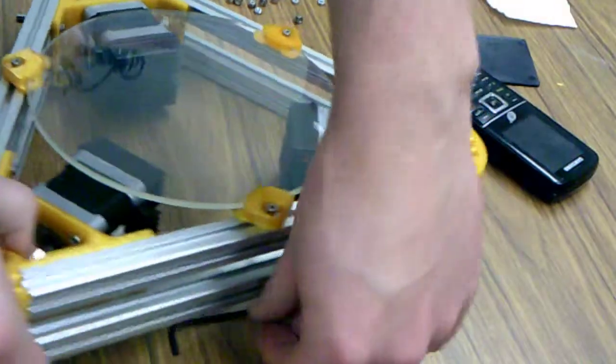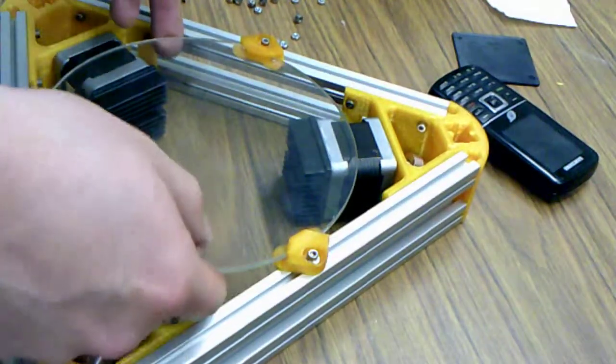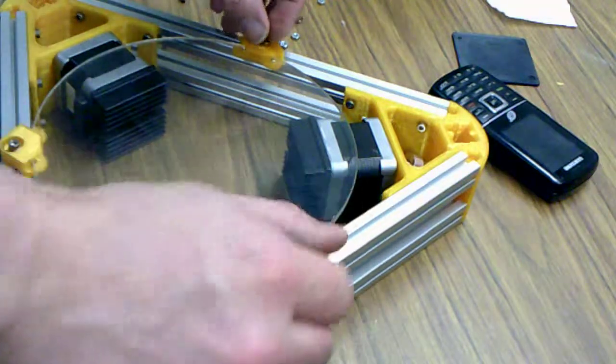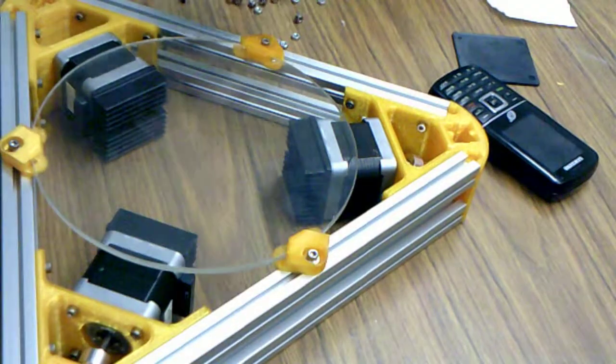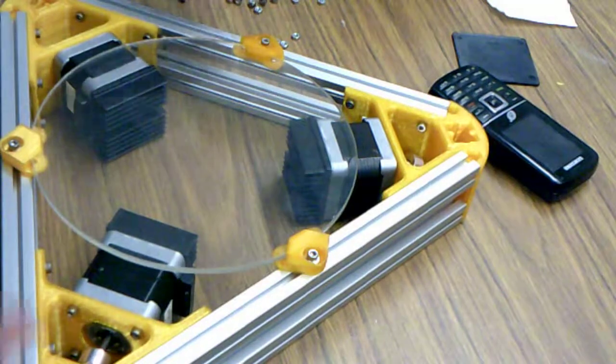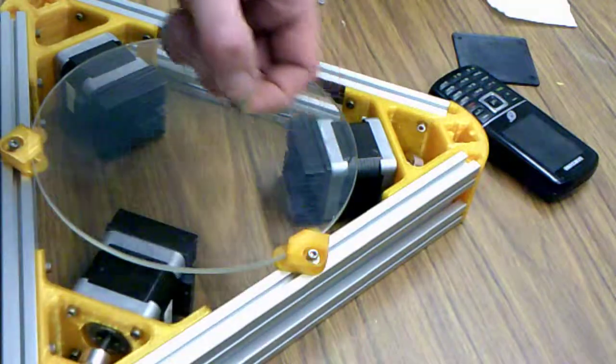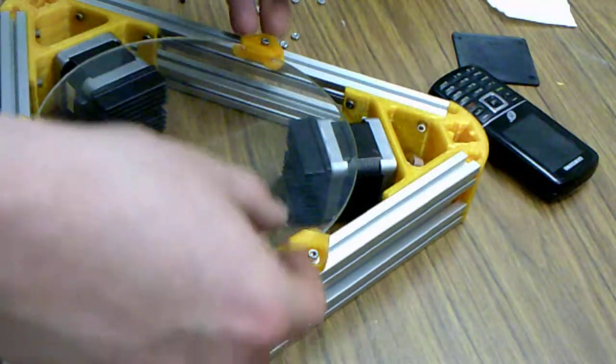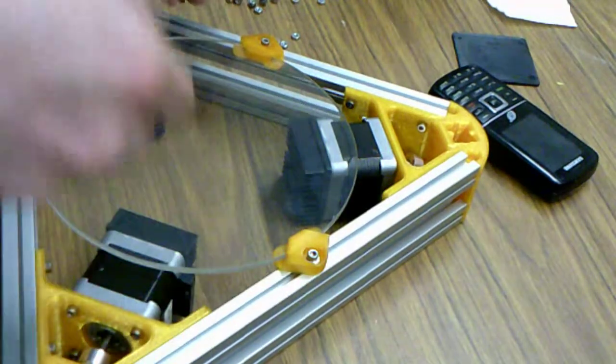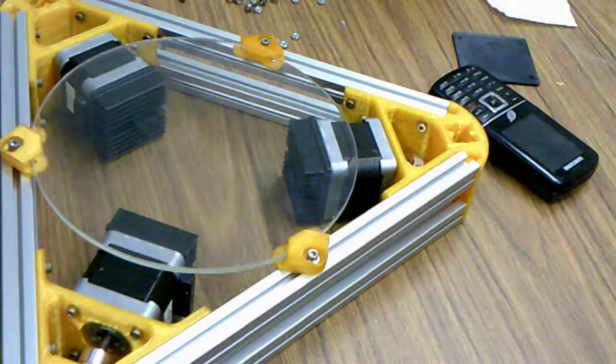I'll do a separate video later on that shows how we attach the leveling bed. We're going to use lock nuts and a hex head that slides in here and a spring. This is going to allow us to tilt the bed in any manner we choose in case our auto-leveling routine is a little off.